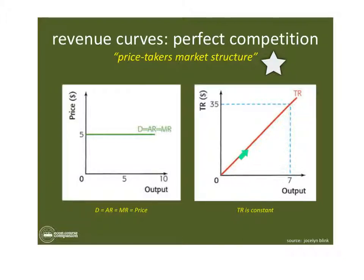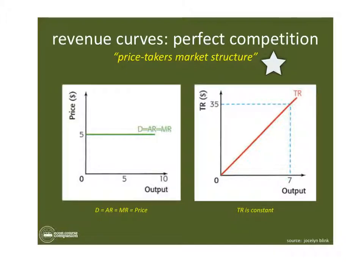In terms of total revenue, TR is constant — for every unit of output they're getting five dollars. So as output continues, every additional unit of output is worth five more dollars because the price is five dollars. For example, if this firm sells seven units of output, the total revenue is obviously 35 dollars. So hold on to that and we'll take a look at the next slide.